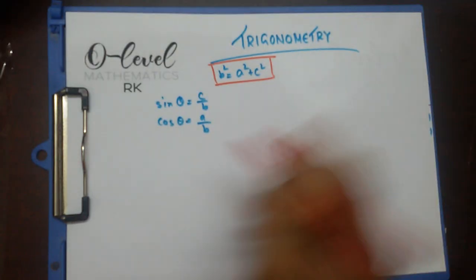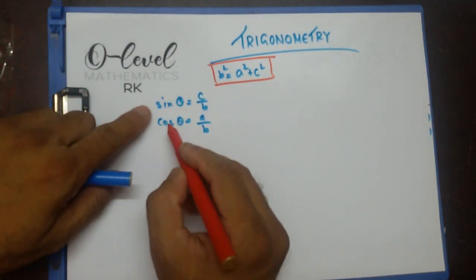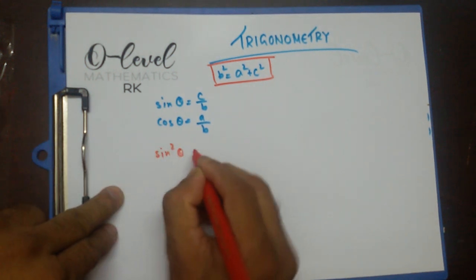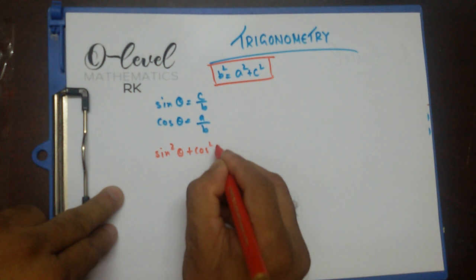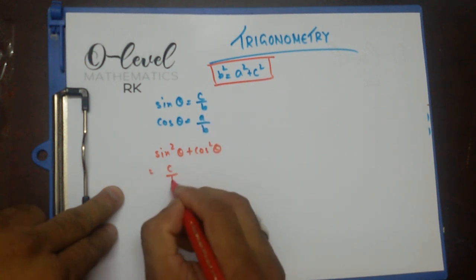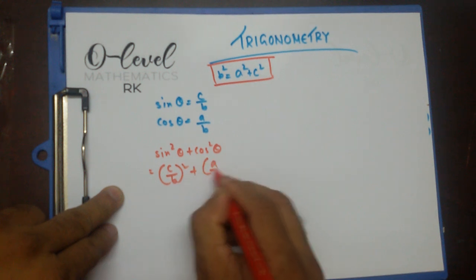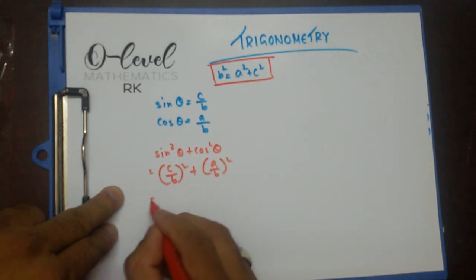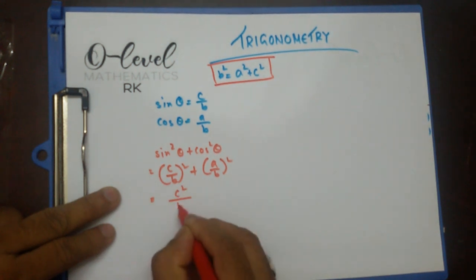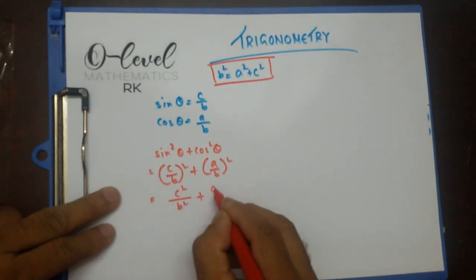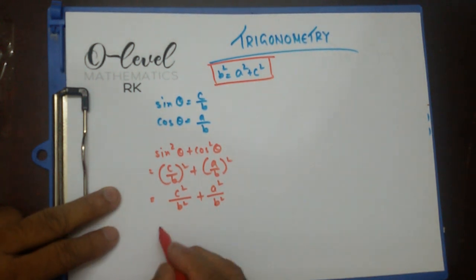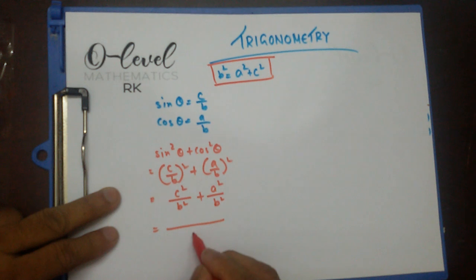What are we going to do? We are going to square them and add them — let us see what happens. Now sin squared theta plus cos squared theta is going to give me (c by b) squared plus (a by b) squared. If I take the square off, it is going to be c squared by b squared plus a squared by b squared. Now simple fraction addition — LCM is b squared.